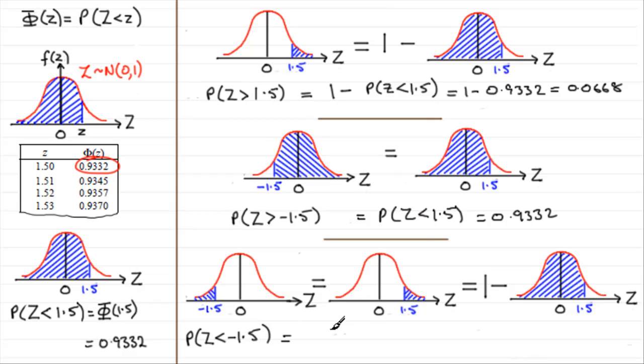So this is going to be the probability of z being greater than 1.5. And then that's going to be 1 minus the probability that it is less than 1.5. And we did that sum up here, 1 minus 0.9332. And that came out at 0.0668.